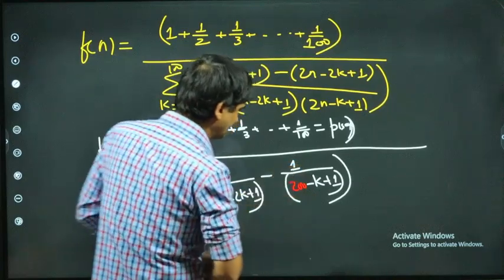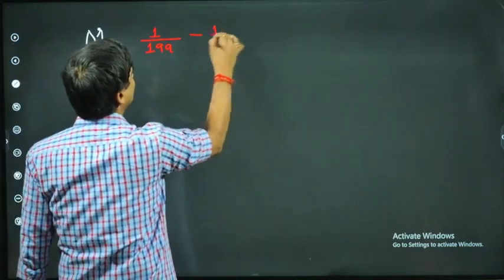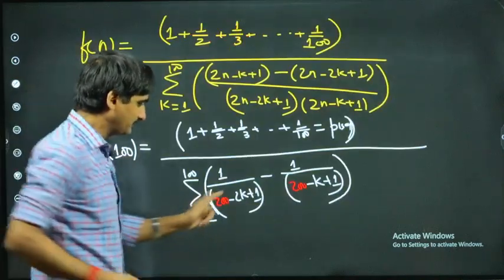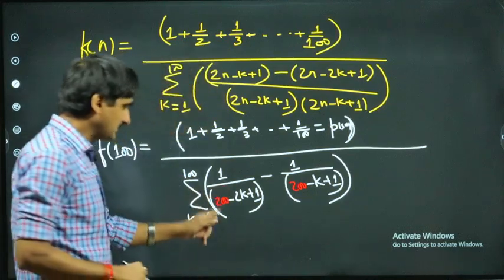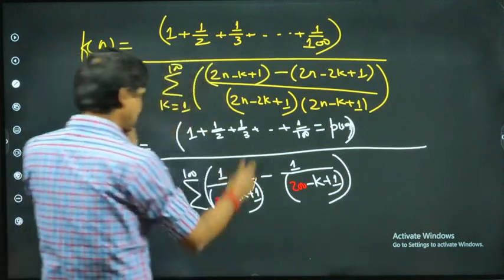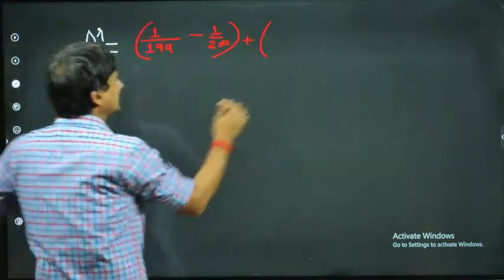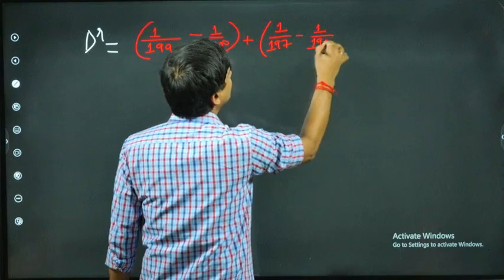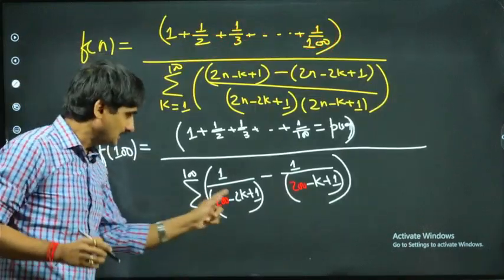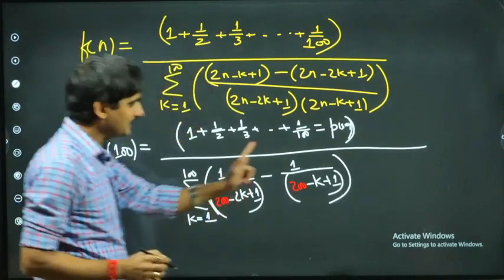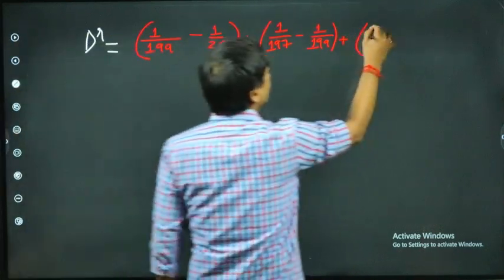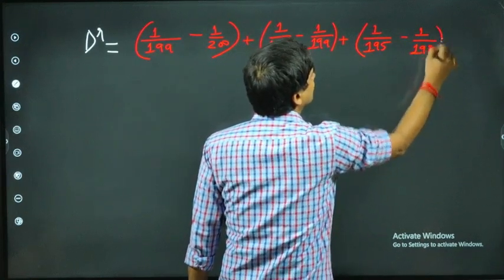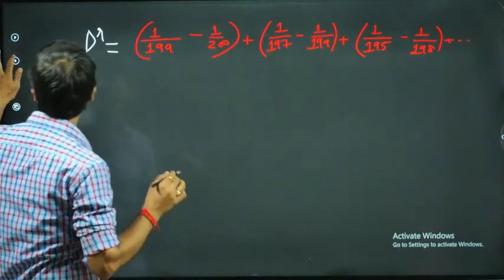For k = 2: 200 - 4 = 196... it gives 1/197 minus 1/199. For k = 3: it gives 1/195 minus 1/198. The pattern continues — plus dot dot dot — for each value of k.